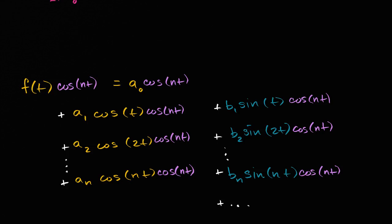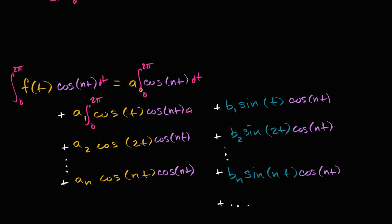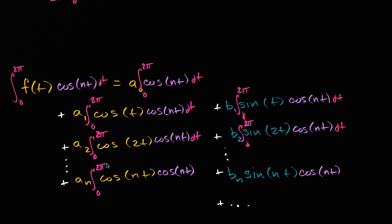Now let's take the definite integral of both sides from zero to two pi. I'll take each coefficient out of its integral. The integral of this infinite sum equals the infinite sum of the individual integrals — that's just an integration property.